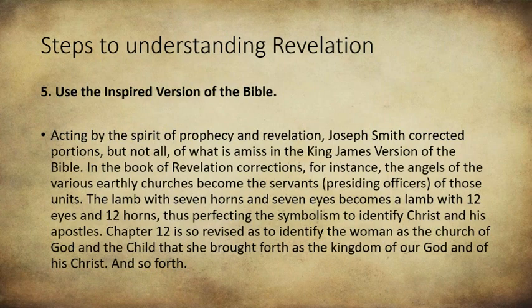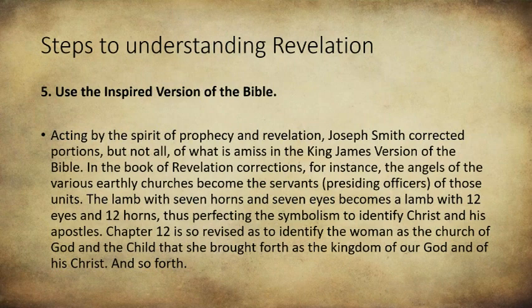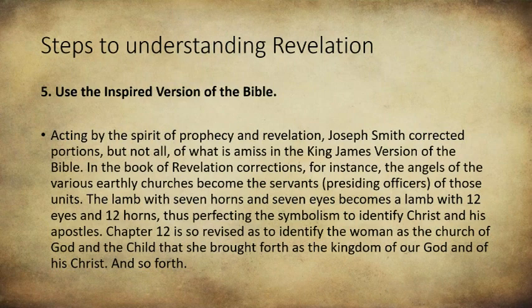Number five: use the inspired version of the Bible — it has been absolutely invaluable. In that same article it says, 'Acting by the spirit of prophecy and revelation, Joseph Smith corrected portions — but not all — of what was amiss in the King James version of the Bible.' In the book of Revelation, for instance, the angels of the various earthly churches became the servants — presiding officers — of those units. The lamb with seven horns and seven eyes became a lamb with twelve eyes and twelve horns, thus perfecting the symbolism to identify Christ and his apostles. Chapter 12 is also revised to identify the woman as the church of God and the child as the kingdom of our God and his Christ.